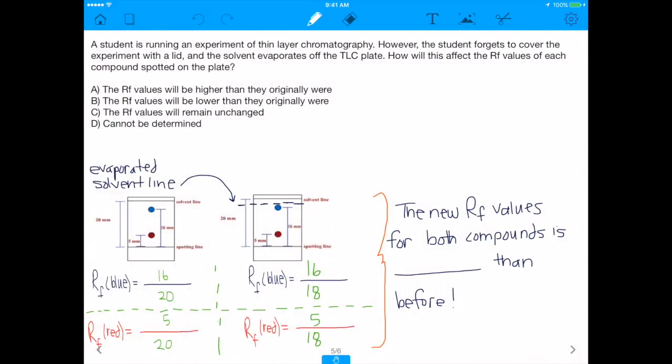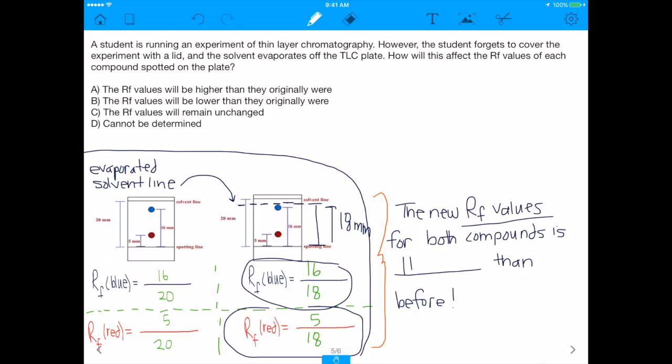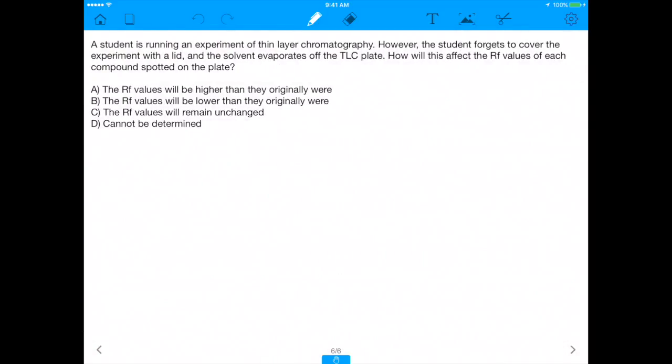So let me give you, again, I showed you already what happened. This is exactly what I drew on the previous page. And remember the new solvent front line was only 18 millimeters away, because some of it evaporated. And if some of it evaporated, the RF values of the red and the blue will change, because the solvent front migrated down. So the new RF values for both compounds is now higher than it was before, because before it was 16 over 20, and now it's 16 over 18, which is much higher. And 5 over 18, compared to 5 over 20, 5 over 18 is higher. So the RF values of both spotted compounds are clearly higher, and pretty much the RF value of any spotted compound will be higher in this experiment if the solvent front migrates down, simply because that's how RF value is defined.